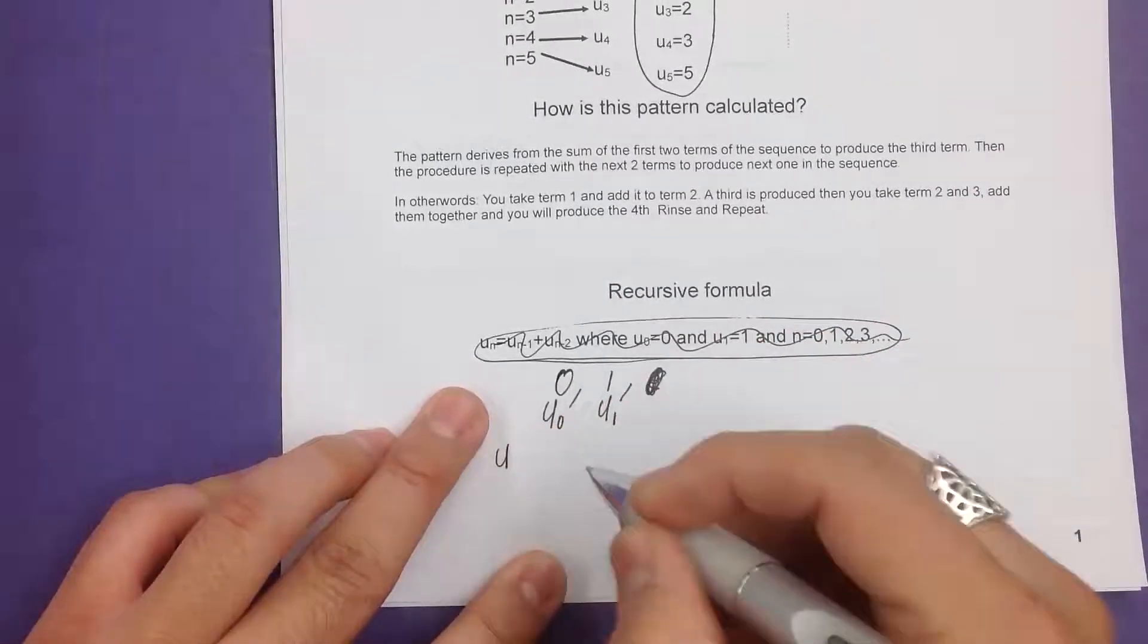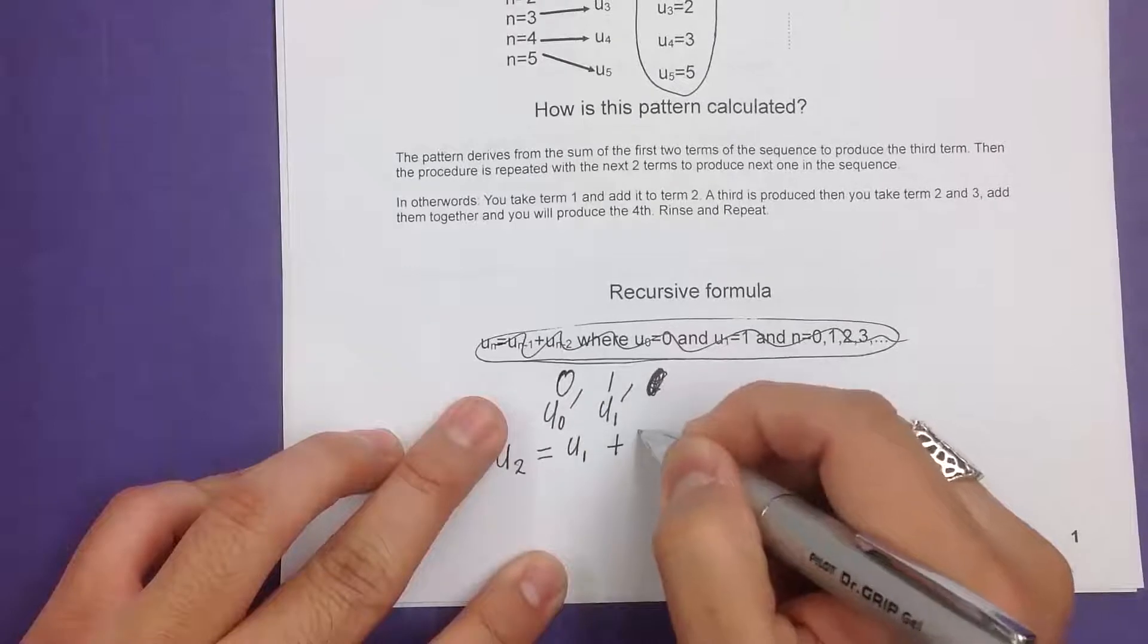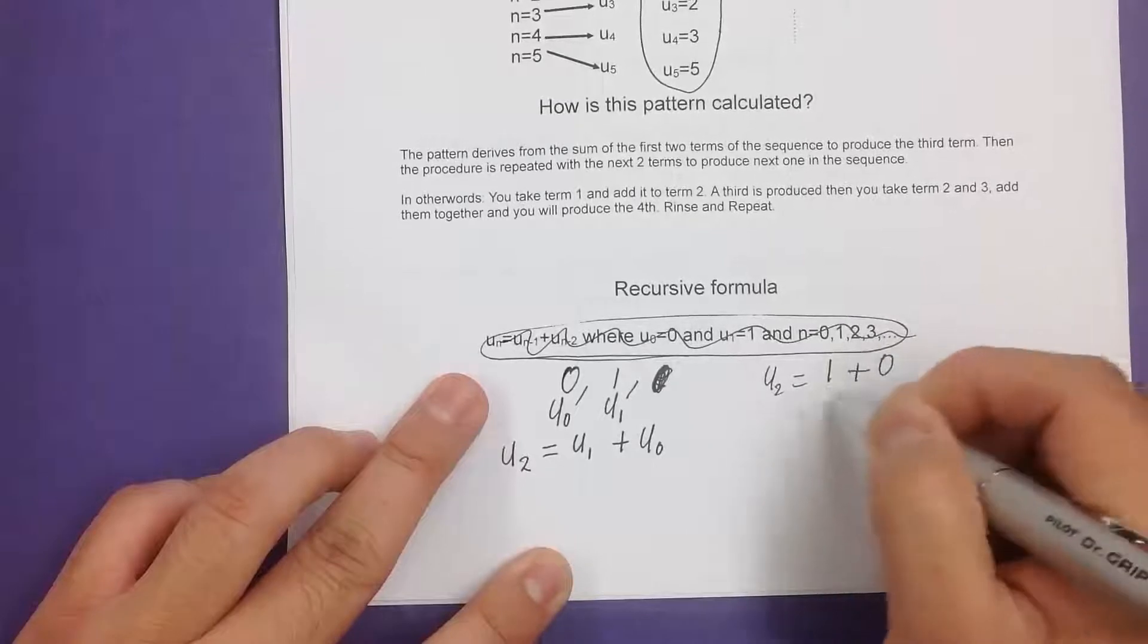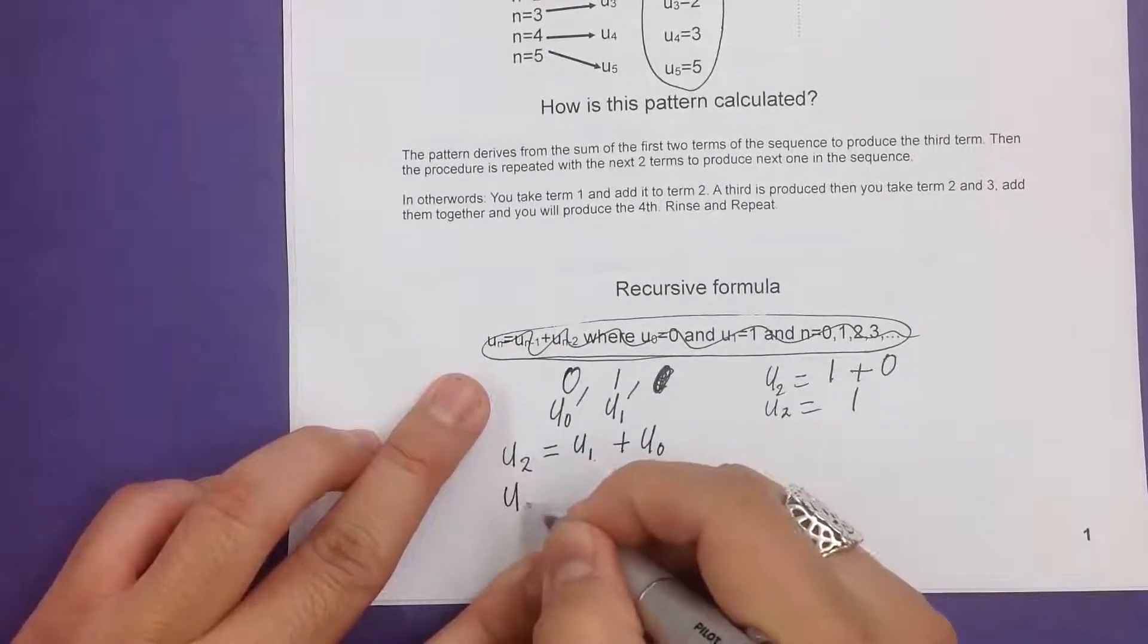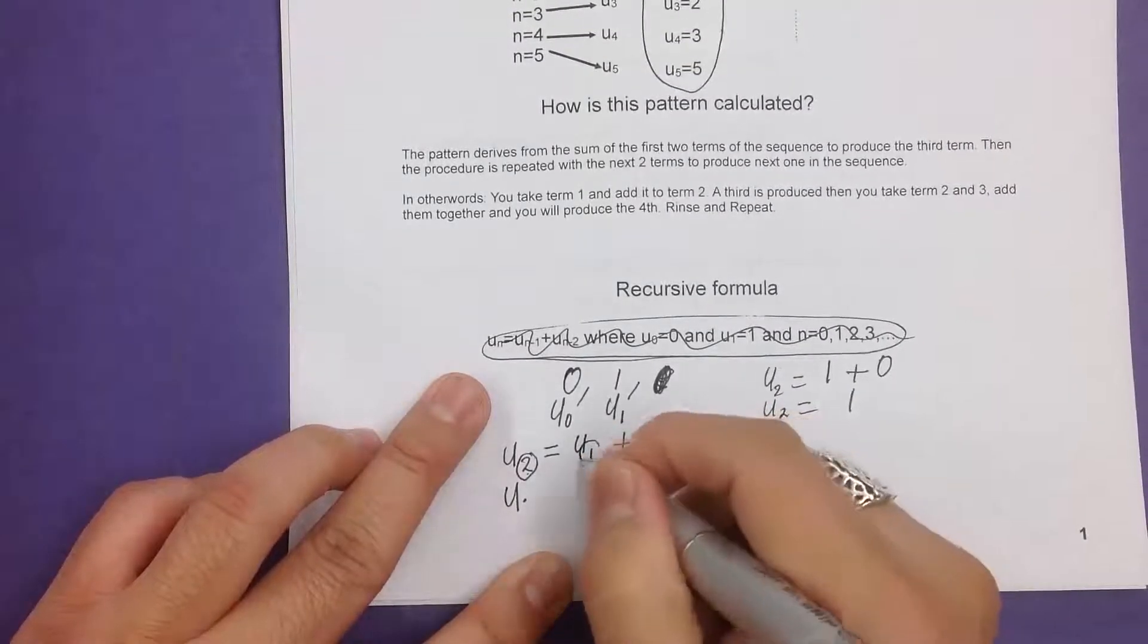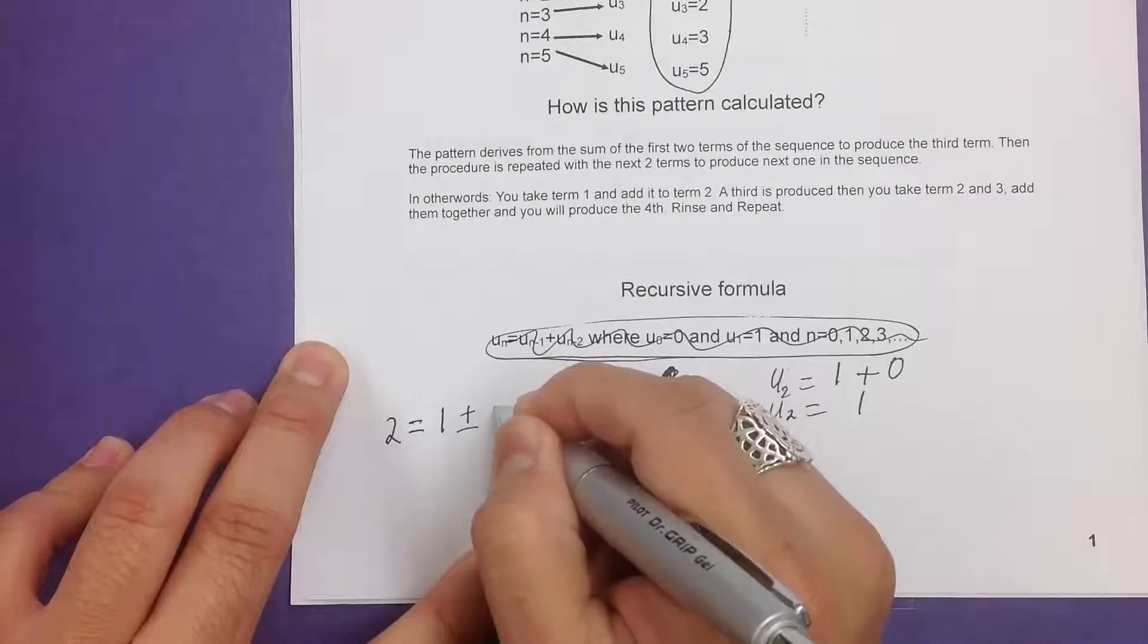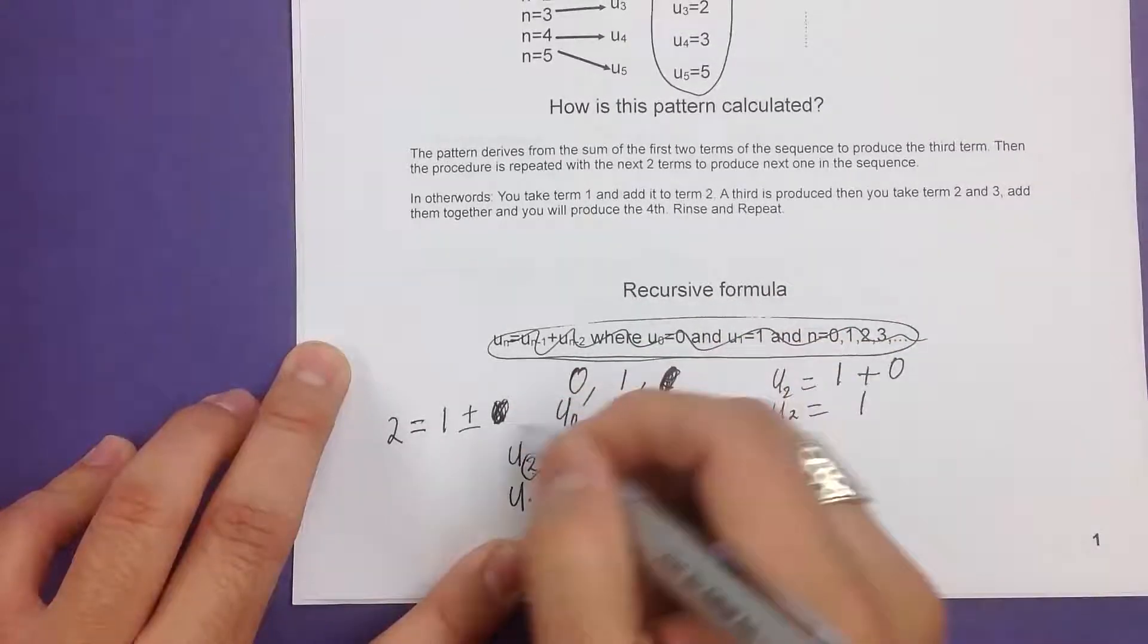So to get u sub 2, we have to take u sub 1 plus u sub 0, and that will give us whatever u sub 2 is. So of course, u sub 2 is equal to 1 plus 0, and that gives me u sub 2 equal to 1. So we're going to start formalizing, we're going to start changing this. To get u sub 2, it's going to be involved with this one. So 2 is equal to 1 plus or minus whatever we put right here.